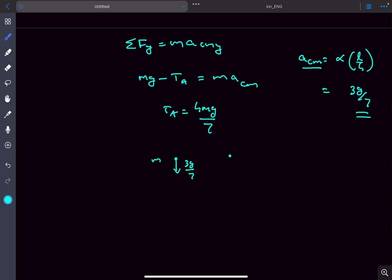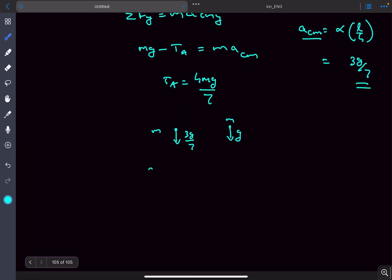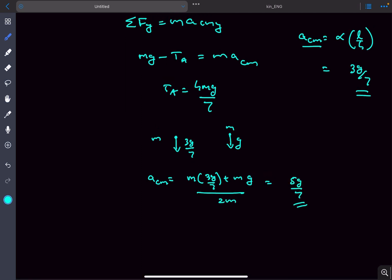The mass M is moving downward with an acceleration of g. So the acceleration of the center of mass of the system will be M1 A1 plus M2 A2 upon M1 plus M2, and on solving you'll get the answer as 5g by 7 which is correct.